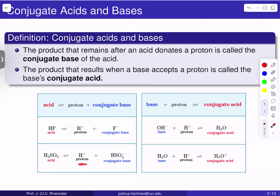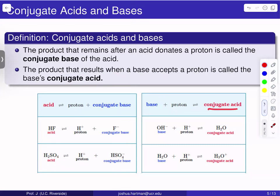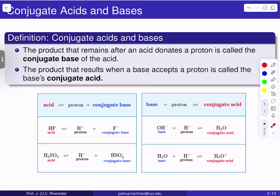Similarly, the product that results when a base accepts a proton is called the base's conjugate acid. We start off with a base, we grab a proton, and we create a conjugate acid. So if hydroxide ions serve as that base, they can grab a proton and form water — water in this sense is the conjugate acid of hydroxide. We could also have water itself serving as a base, grabbing a proton to form hydronium ions, making hydronium ion the conjugate acid.